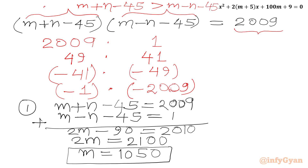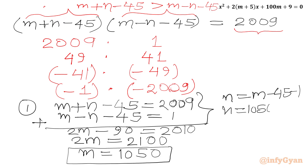We cross-check whether n is a positive integer. Plugging m = 1050 into the second equation: n = m - 45 - 1 = 1050 - 46 = 1004, which is a positive integer. So our first value of m is 1050.